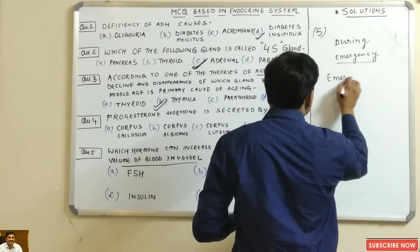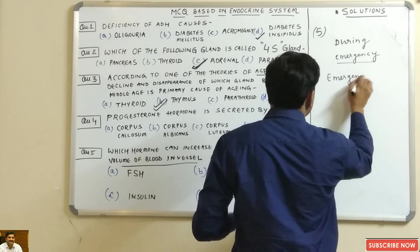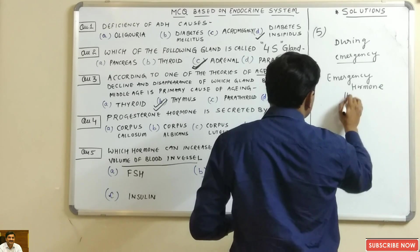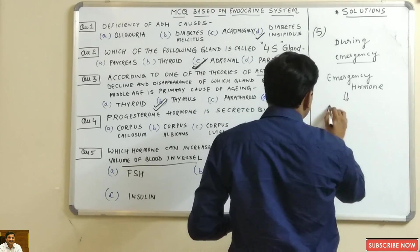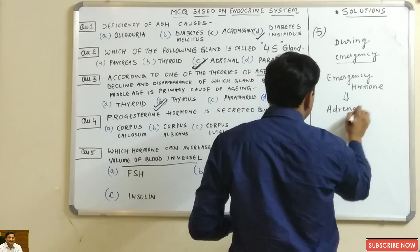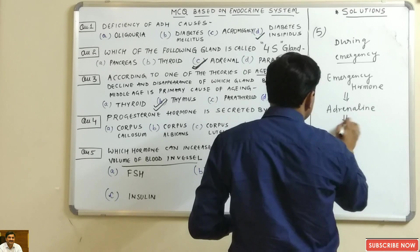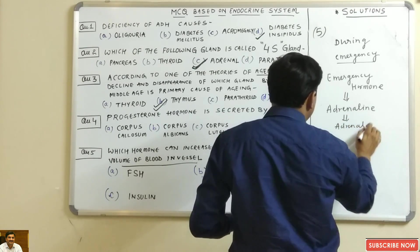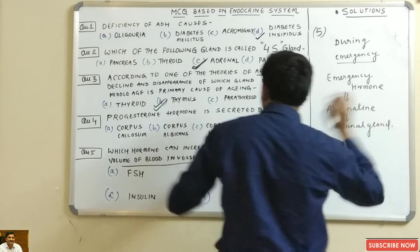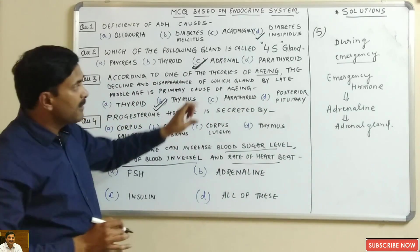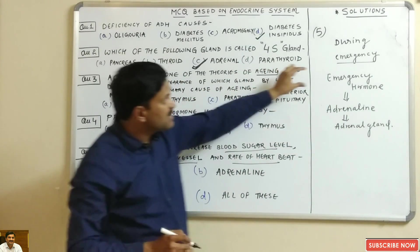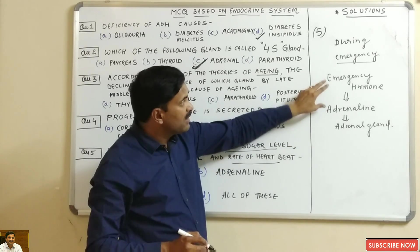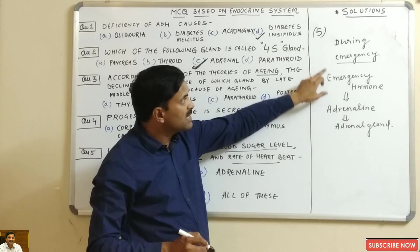All these conditions occur during an emergency. There is an emergency hormone in our body known as adrenaline, which is released by the adrenal gland. Adrenaline causes several emergency responses in the body.